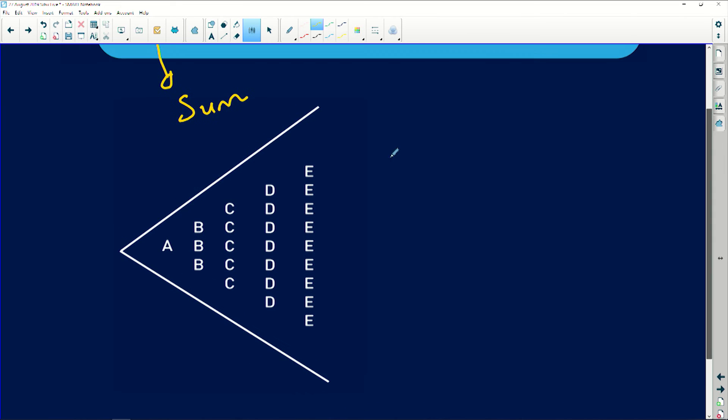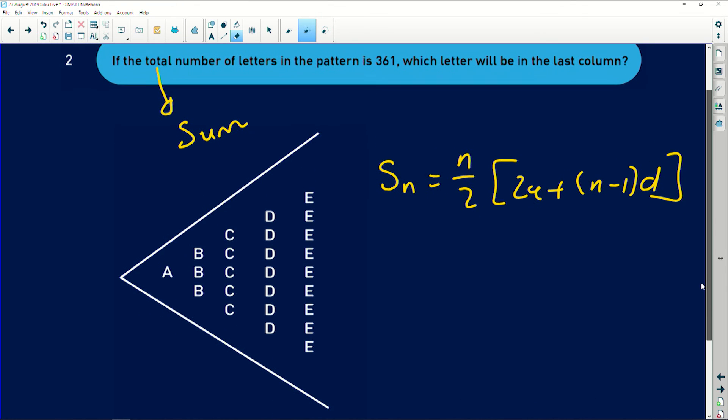So what will happen in this case? Well we need the formula for the sum. So the sum of N times is N over 2 into 2A plus N minus 1 multiplied by D. We are looking for the sum, right? We know the sum. What is the sum? Well you will notice that the sum in this context was given to us as 361.